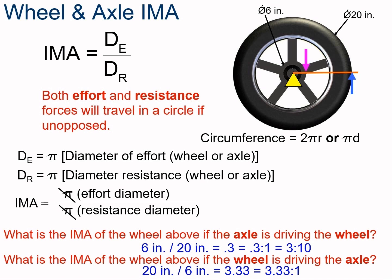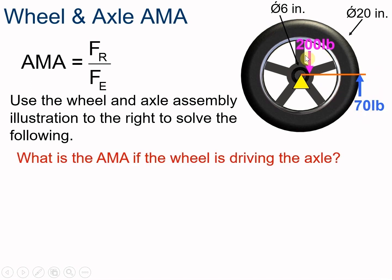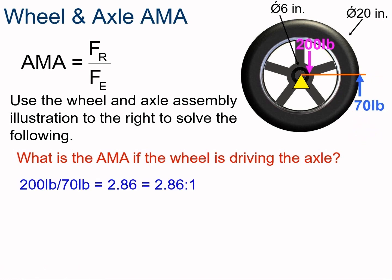Let's bring forces into this problem. The AMA, the actual mechanical advantage, is the resistance force divided by the effort force. If 70 pounds is the effort and 200 pounds is the resistance, applying 70 pounds here can get 200 pounds out — just like a second class lever. Pause the video and solve. We're getting 200 pounds of force out and only putting 70 pounds in. 200 divided by 70 gives us 2.86, or a 2.86 to 1 ratio — more than doubling the force we're putting in.